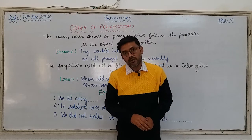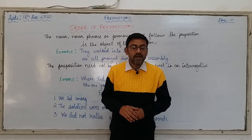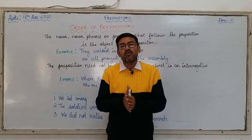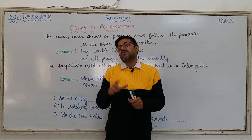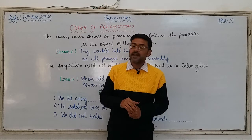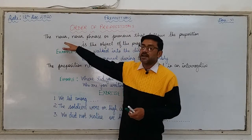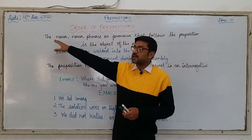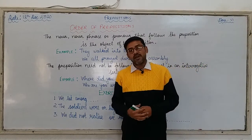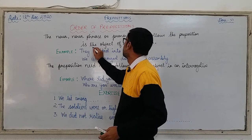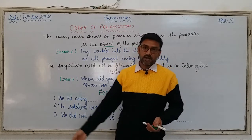The noun, noun phrase, or pronoun that follows the preposition is known as the object of the preposition. Now, the term 'object' — I think we have done one chapter on objects, objects of a verb. So you have a brief idea: there are two types of objects, one is the direct object and the other is the indirect object. Both these objects deal with nouns. Similarly here, the moment this word 'object' comes, it is basically talking about a noun — the noun, noun phrase, or pronoun that follows the preposition.